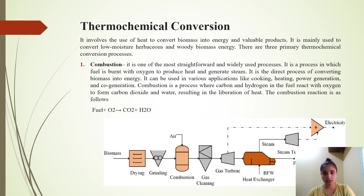Thermochemical conversion involves the use of heat to convert biomass into energy and valuable products. It is mainly used to convert low-moisture herbaceous and woody biomass into energy. There are three primary thermochemical processes.